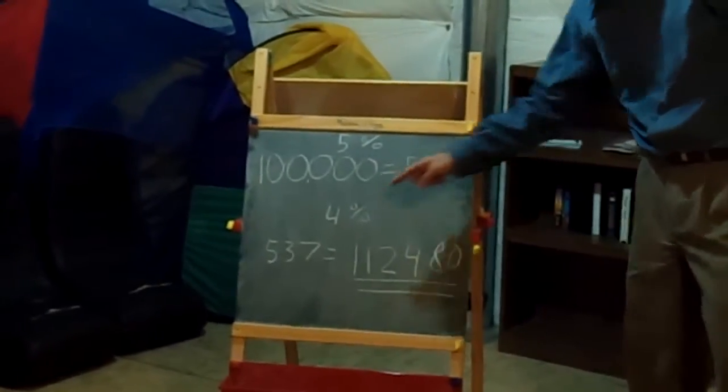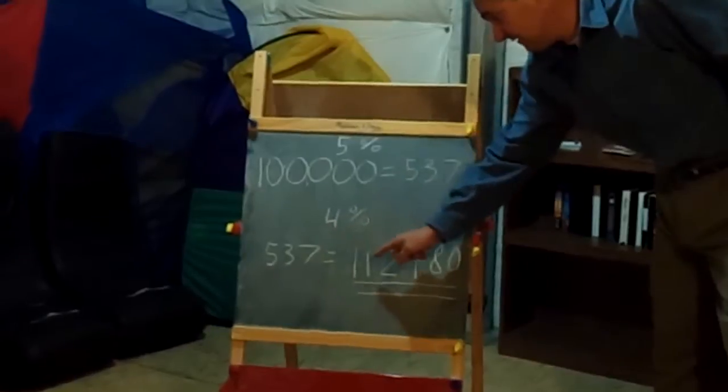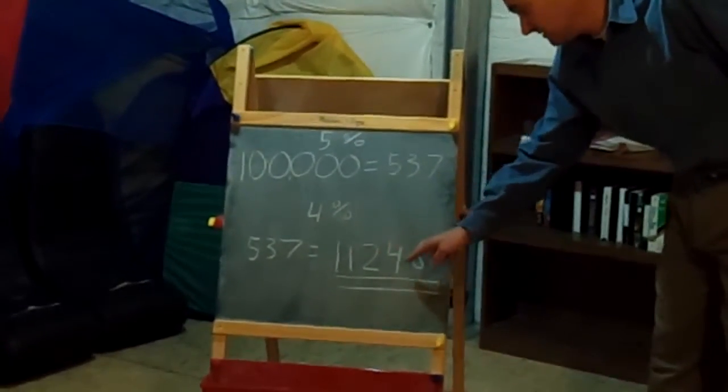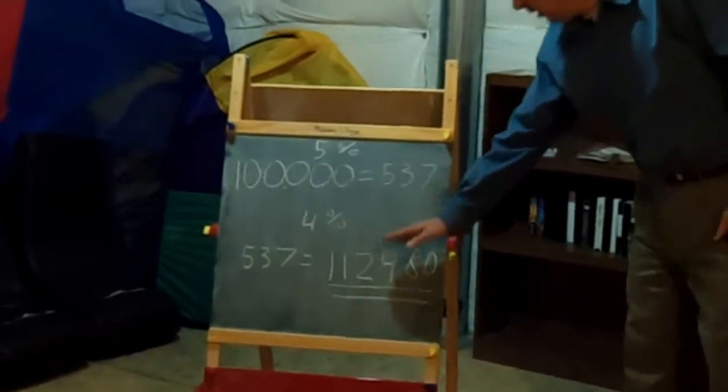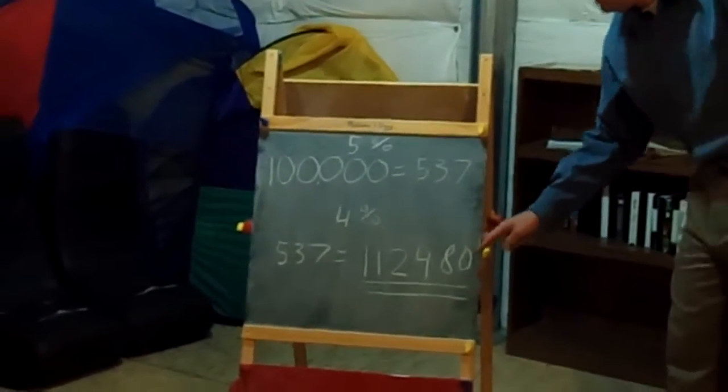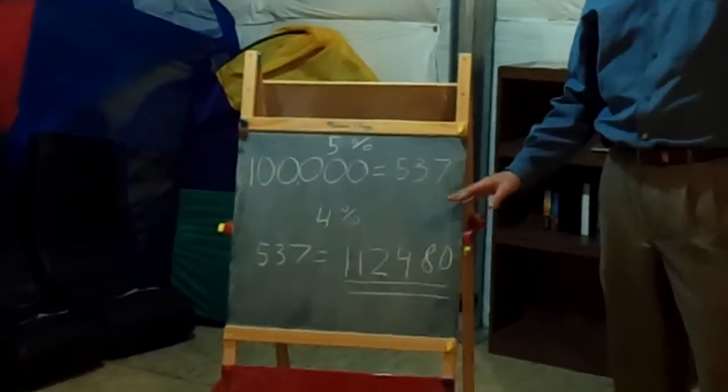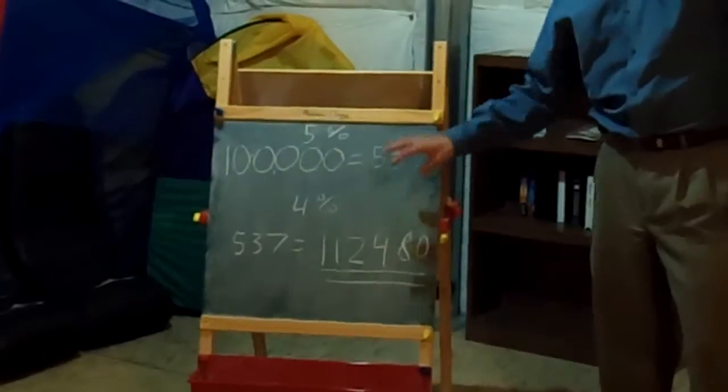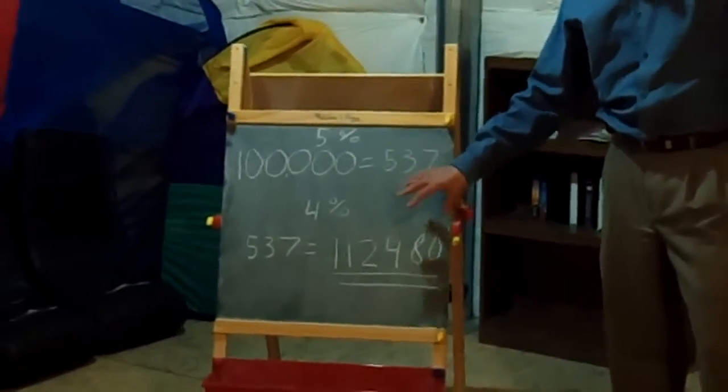At 4%, that same payment of $537 gets you a loan amount of $112,480. The lower interest rate just got you another $12,480 in buying power for the exact same payment. This is why, when rates are low, it's a good time to buy.